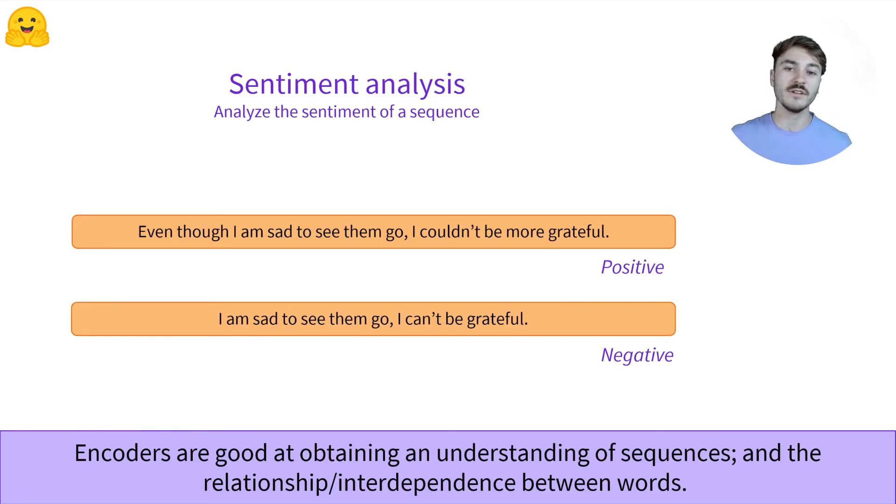For example, here, given the two sequences, we use the model to compute a prediction, and to classify the sequences among these two classes, positive and negative. While the two sequences are very similar, containing the same words, the meaning is entirely different, and the encoder model is able to grasp that difference.